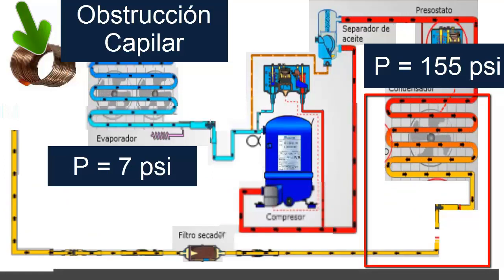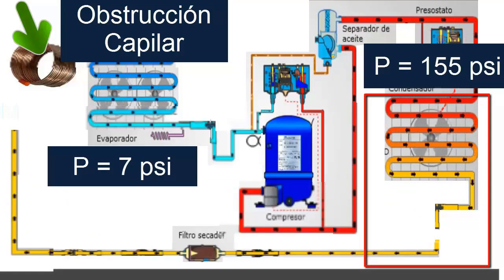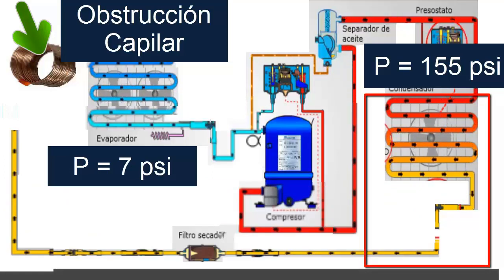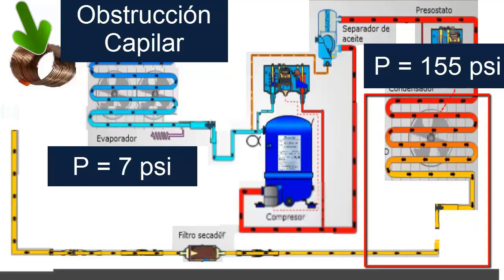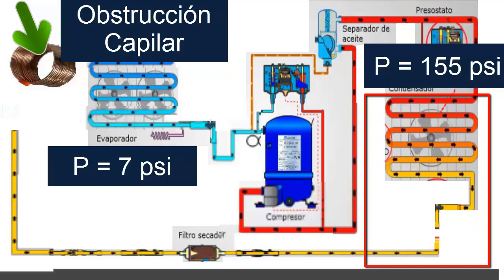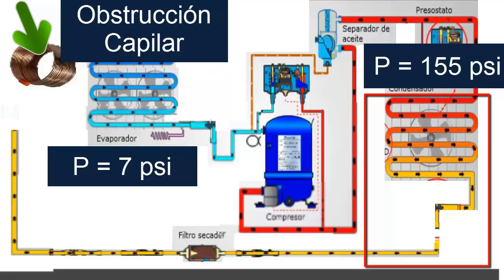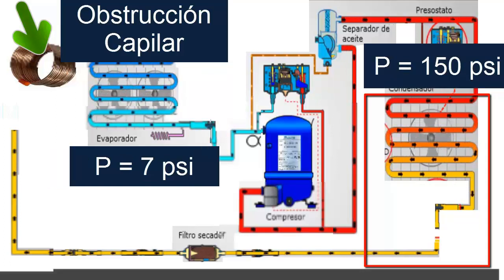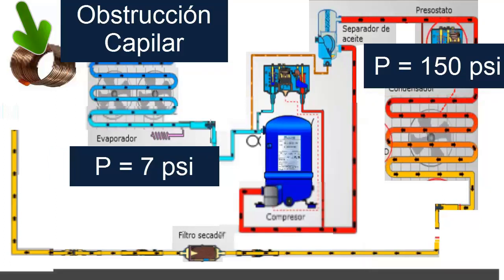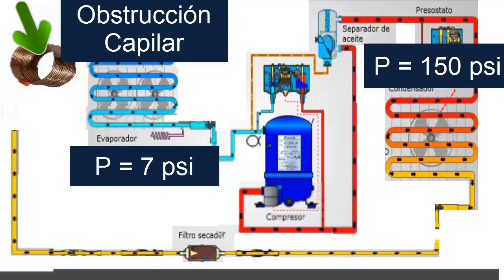Therefore, as the minutes pass, the high pressure that had risen to 160, 165 — assuming these periods — begins to decrease again and can now be found at 150. Notice that the low pressure continues to go down and the high pressure had a peak and now began to come down to 150.